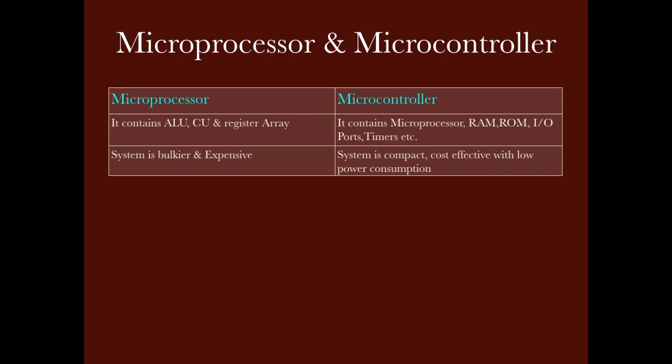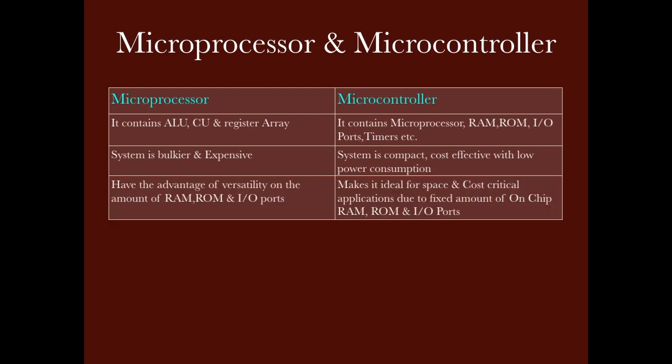The microprocessor system is more bulky and expensive. Why? Because the microprocessor cannot work as a standalone device, so we need to add additional memory and I/O devices. Compare that to the microcontroller — it is a compact device, internally connected, so it is cost effective and its power consumption is low compared to the microprocessor.